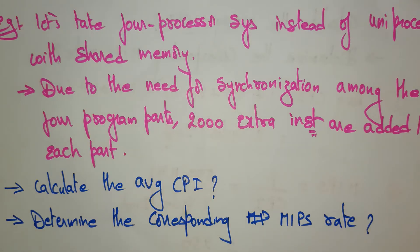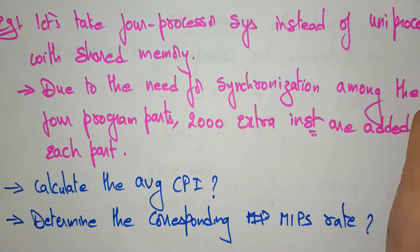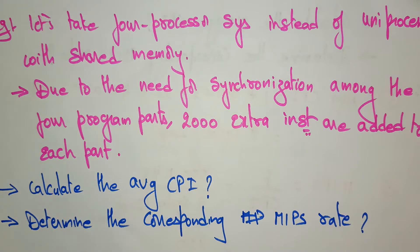Hi students, welcome back. Let's continue with the previous problem. We are discussing how to calculate the performance of a system, with a little modification. So let's take a 4-processor system instead of a uniprocessor. In the previous question, I used the uniprocessor to calculate the average CPI and MIPS.